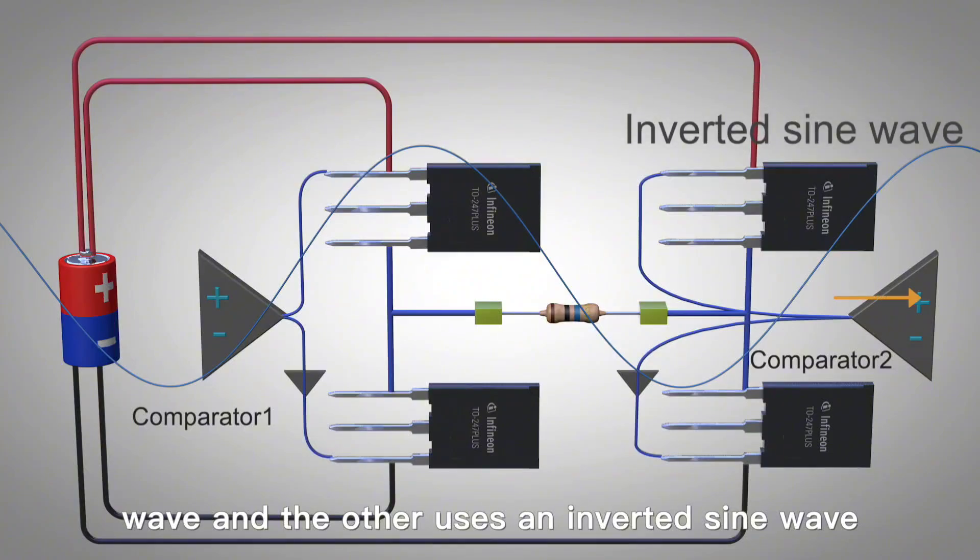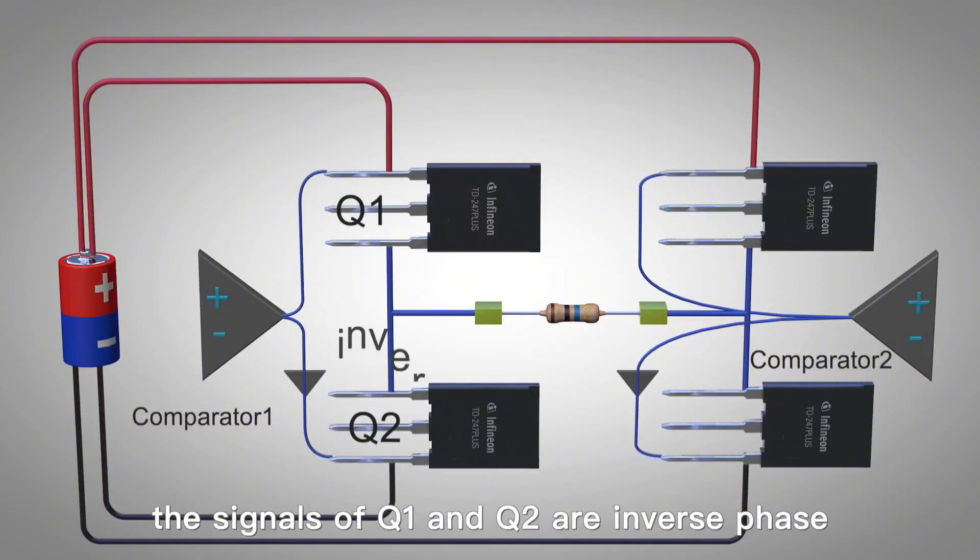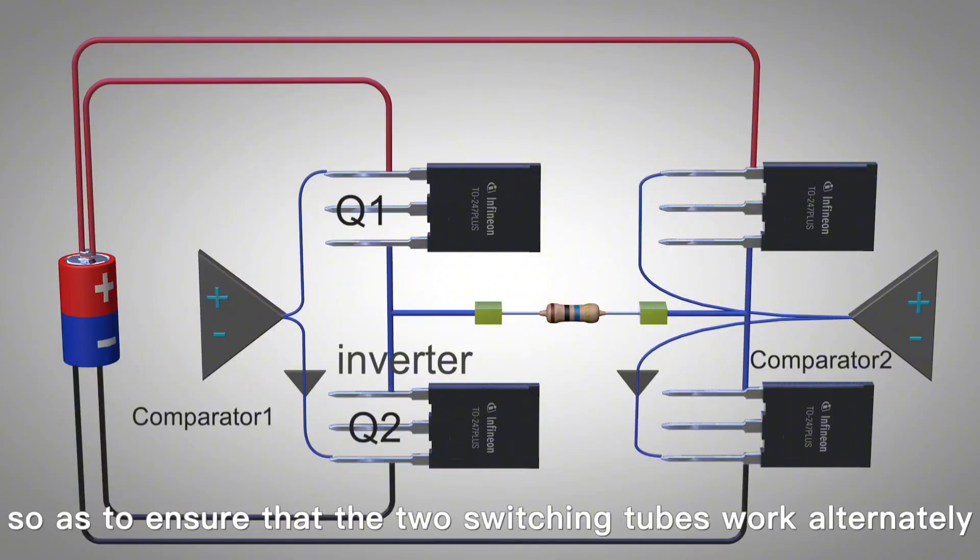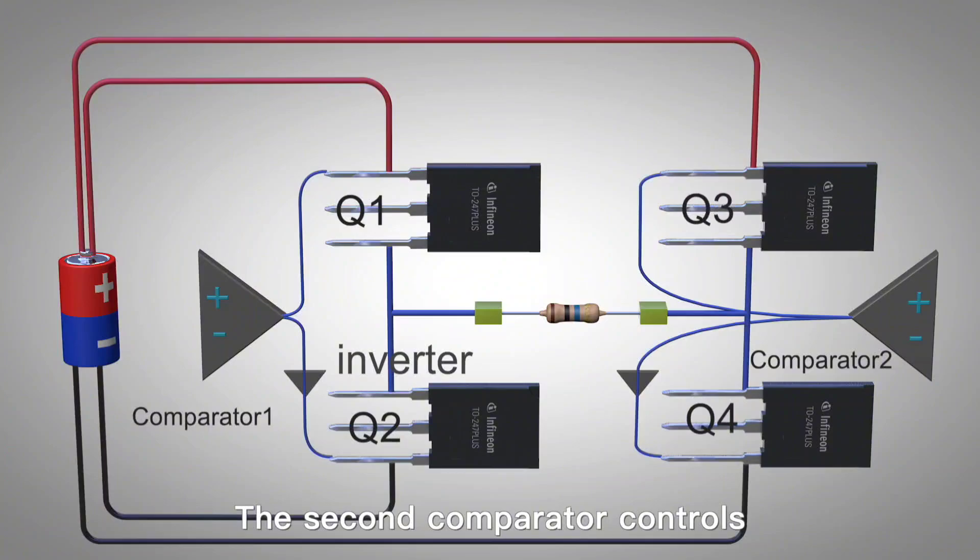The first comparator controls Q1 and Q2. The Q1 and Q2 signals are reverse. Q1 is high potential and Q2 is low potential. This ensures that the two switching tubes work alternately. The second comparator controls Q3 and Q4. The control logic is the same.